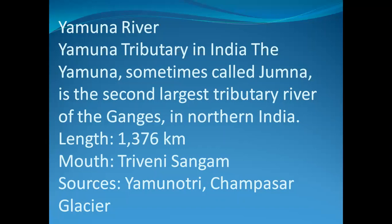River Yamuna — the Yamuna is a tributary in India, sometimes also called Jamuna. It is the second largest tributary river of the Ganges and a tributary of river Ganga in Northern India. The length of river Yamuna is 1,376 km. Its mouth is at Triveni Sangam and its source is the Yamunotri Champasan Glacier.